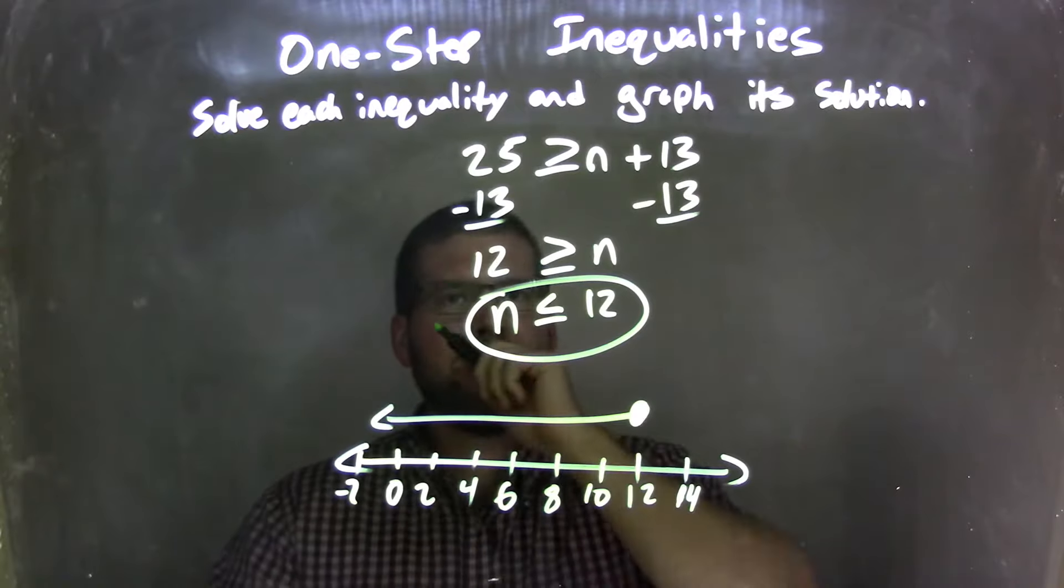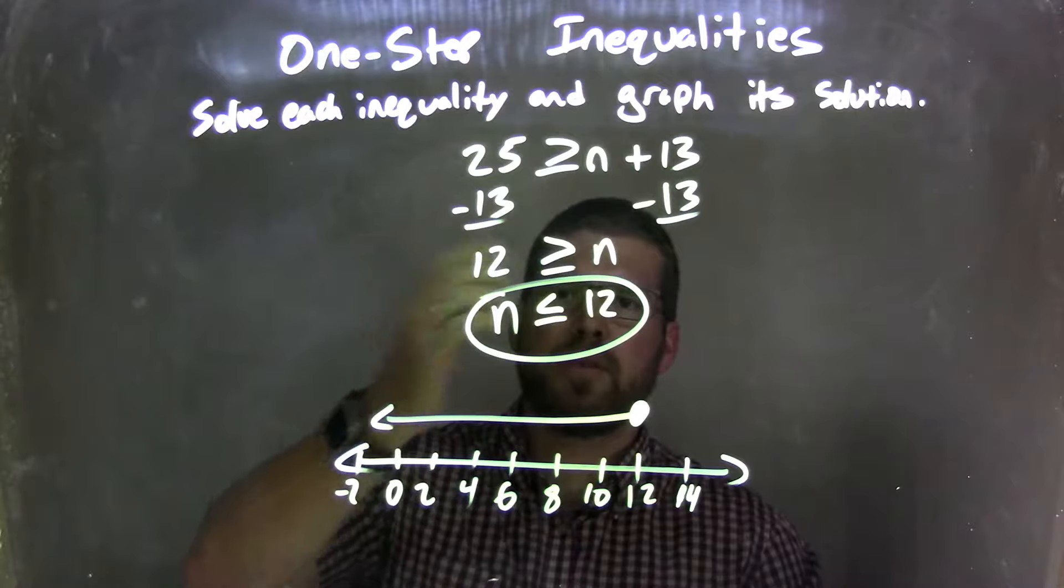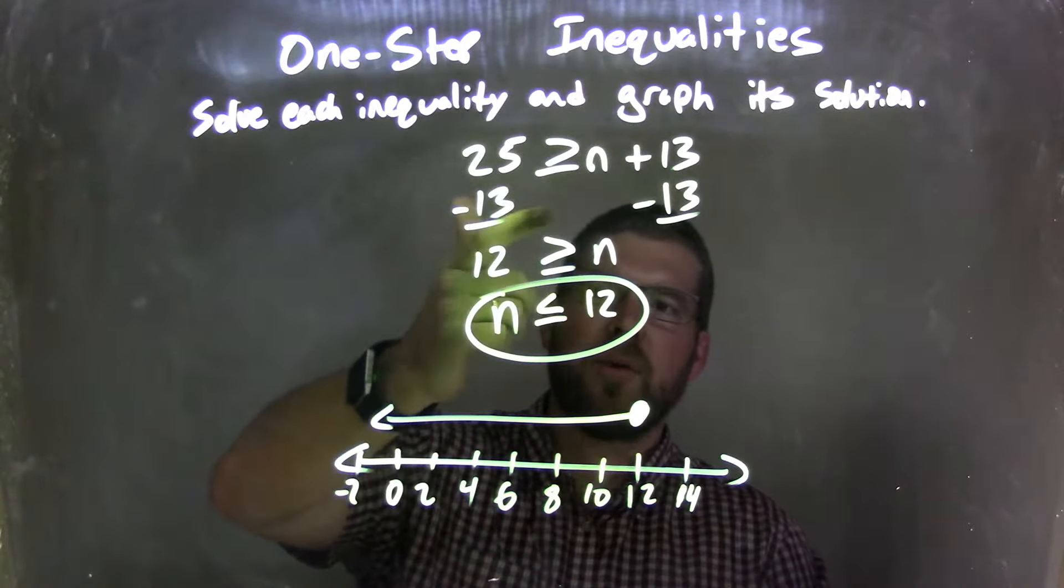So let's recap. We were given 25 is greater than or equal to n plus 13. I subtracted 13 from both sides, leaving me 25 minus 13 means 12 on the left, and it's greater than or equal to n.